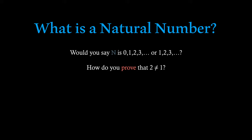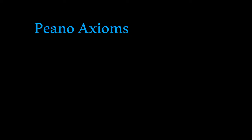We'll start by talking about an Italian mathematician called Giuseppe Peano, who provided a basis for what natural numbers really are. He produced a list of five axioms that define what natural numbers are, something that has been unchanged since the 19th century.